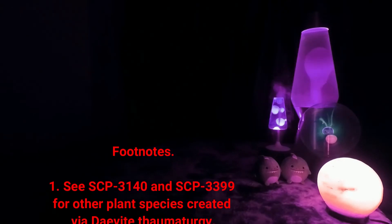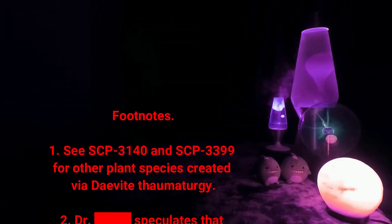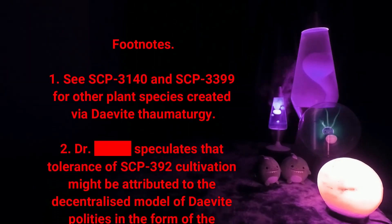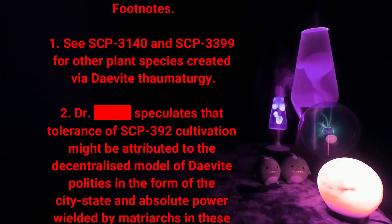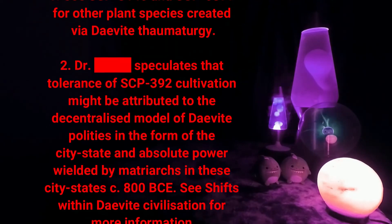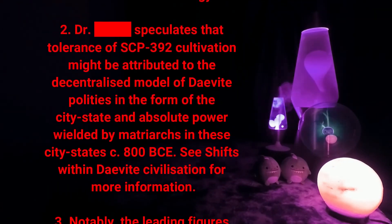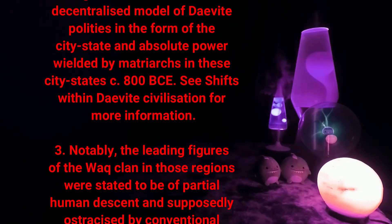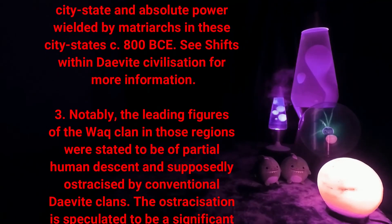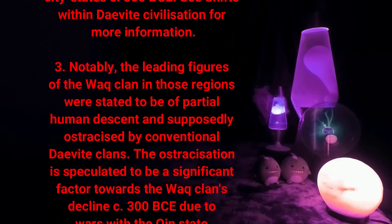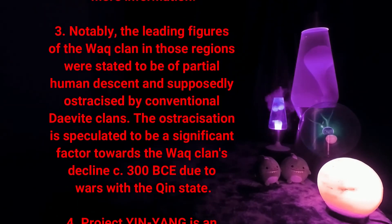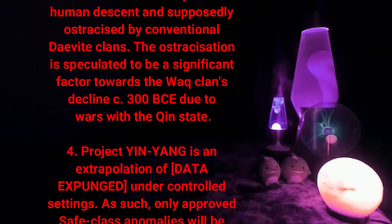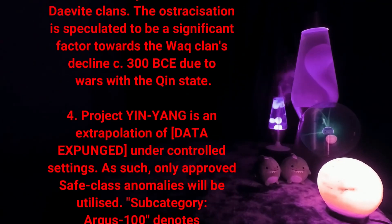Footnote 1: See SCP-3140 and SCP-3399 for other plant species created via D-Vite thaumaturgy. Footnote 2: [Dr. Data Expunged] speculates that tolerance of SCP-392 cultivation might be attributed to the decentralized model of D-Vite polities in the form of the city-state, and absolute power wielded by matriarchs in these city-states circa 800 BCE. See Shifts Within D-Vite Civilization for more information. Footnote 3: Notably, the leading figures of the Wack clan in those regions were stated to be of partial human descent and supposedly ostracized by conventional D-Vite clans. The ostracization is speculated to be a significant factor toward the Wack clan's decline circa 300 BCE, due to wars with the kin-state.